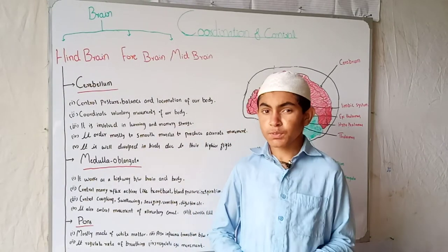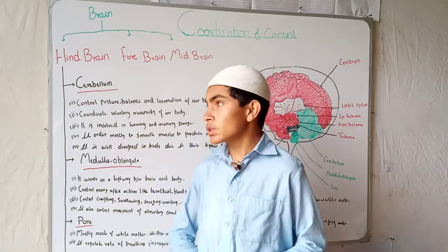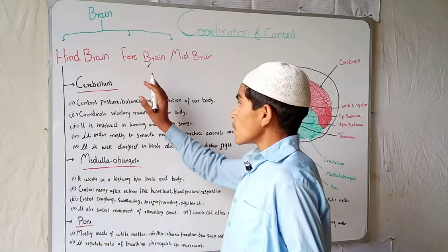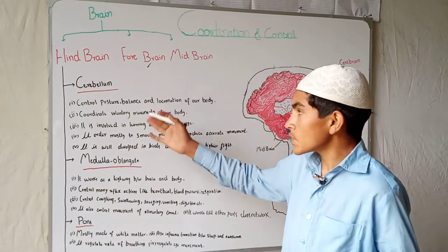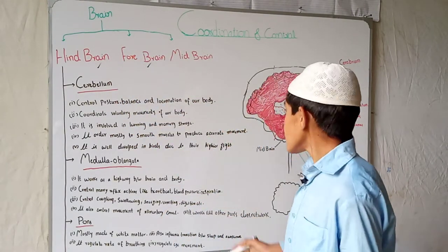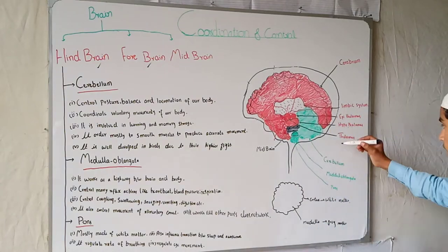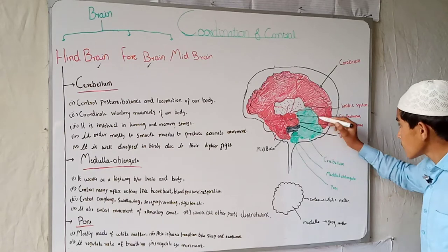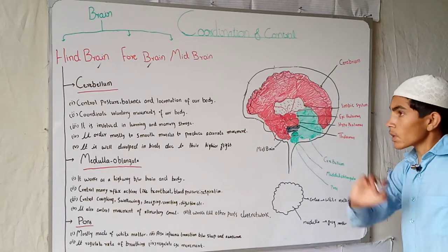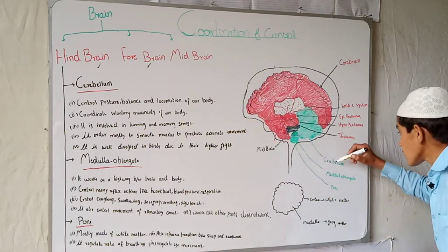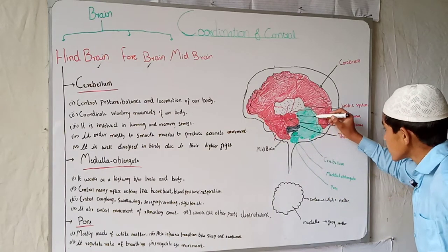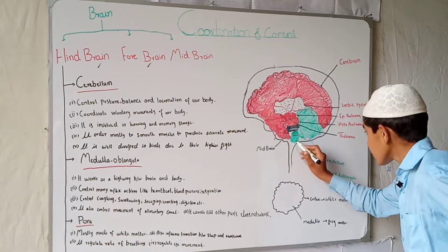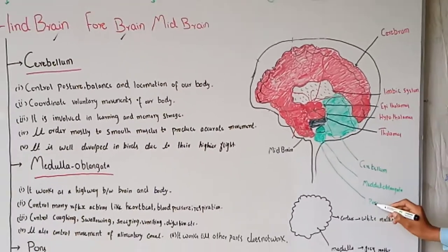Assalamu alaikum students. In the previous lecture we saw about the forebrain. Now we are going to talk about the next part of the brain, which is the hindbrain. You can see here — this whole green portion is our hindbrain. It consists of three parts: the cerebellum, the medulla oblongata, and the pons.